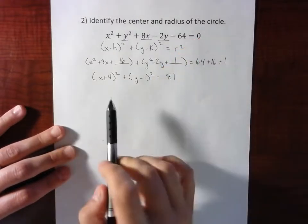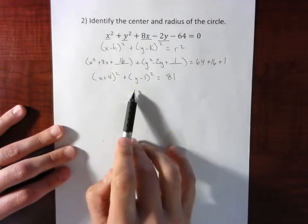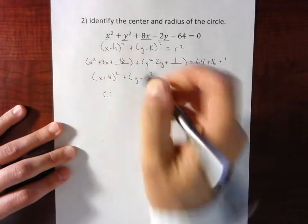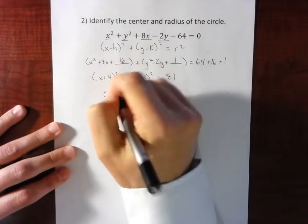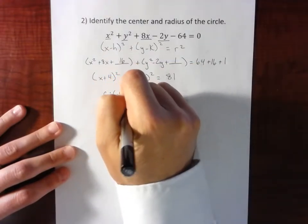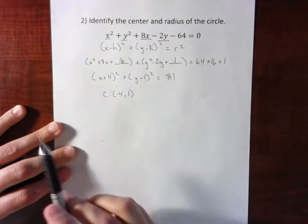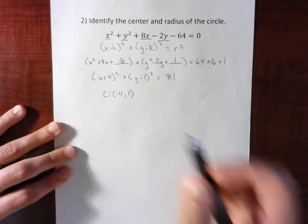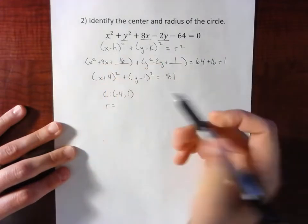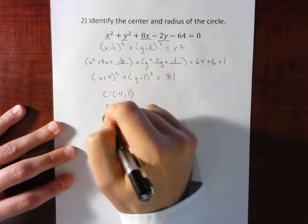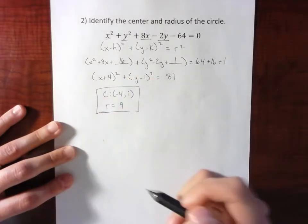Now we've taken it and changed it into a much more user-friendly form. The center, of course, is h,k. Those signs, remember, are backwards. At least they feel backwards. Those negatives are built right into the formula there. So my center is negative 4, 1. My radius is the square root of 81, which in this case is a nice number. It is 9.